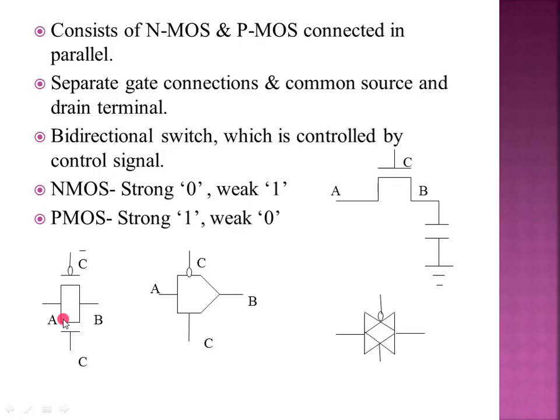The pass transistor logic has a weakness. The NMOS pass transistor is strong 0 but weak 1. That means when passing a logic 1, the output is only Vdd minus Vtn, not a full Vdd. So the NMOS output for logic 1 is weak.